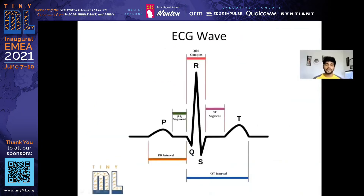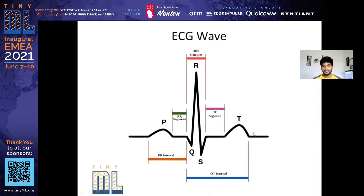Before proceeding with the technical aspects, I want to mention some ECG terminologies. In a general ECG wave, there will be a small P wave, the larger one will be the QRS complex, and the end one will be the T wave. These are the major points in an ECG wave.